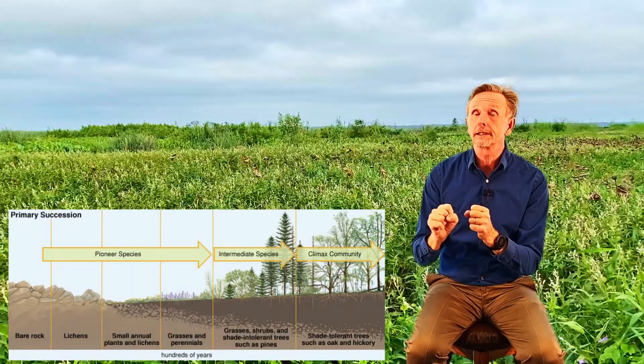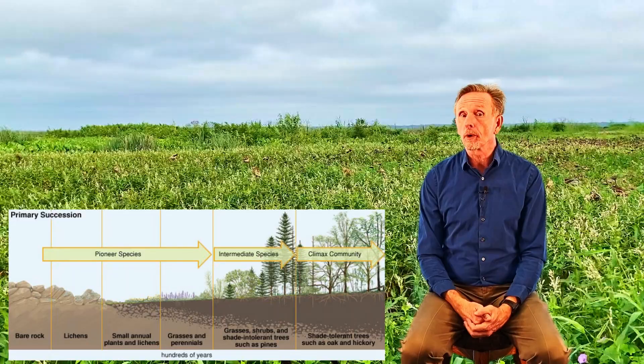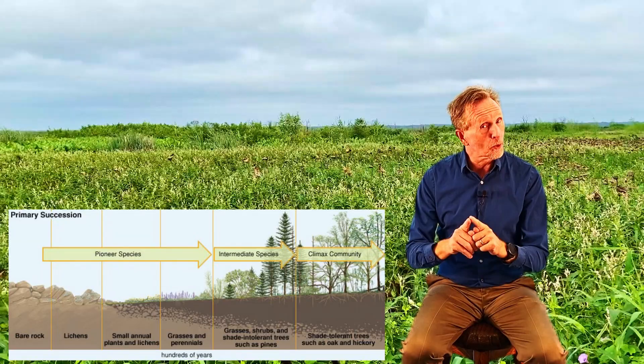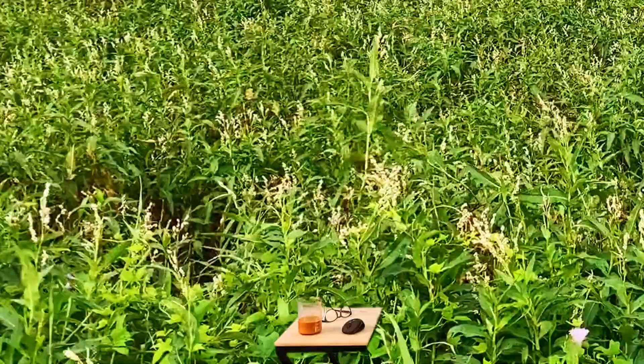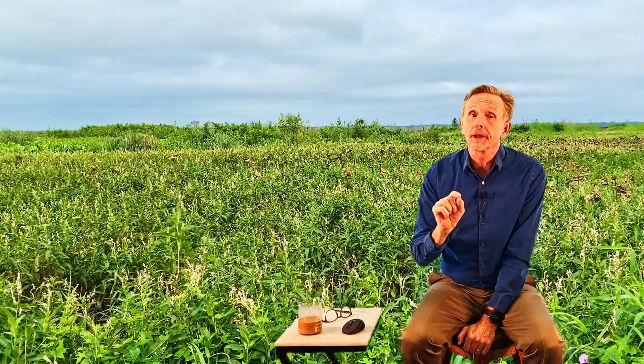Primary succession is much slower than secondary succession because it begins where there is no soil. Remember that — soil versus no soil is your easy go-to to figure out which is which. When we have primary succession, it begins with a pioneer species: some form of species that comes in and colonizes an uninhabited area, beginning the ecological cycle so that other species can get established.